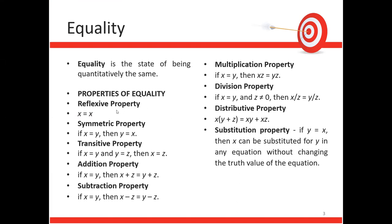Properties of equality: the Reflexive Property states x = x. The Symmetric Property states if x = y, then y = x. The Transitive Property states if x = y and y = c, then x = c. The Addition Property: if x = y, then x + c = y + c. The Subtraction Property: if x = y, then x − c = y − c. The Multiplication Property: if x = y, then xc = yc. The Distributive Property: x(y + c) = xy + xc. The Substitutive Property: x can be substituted for y in any equation without changing the truth value.